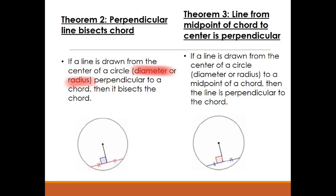Theorem 3 is the converse of Theorem 2 — it goes in the other direction. Now we're pretending we don't know this is a right angle. It says if a line drawn from the center of the circle — a diameter or radius — goes to a midpoint on a chord, then the line is perpendicular to the chord. Let's do the same quick proof, pretending we don't know this is a right angle.